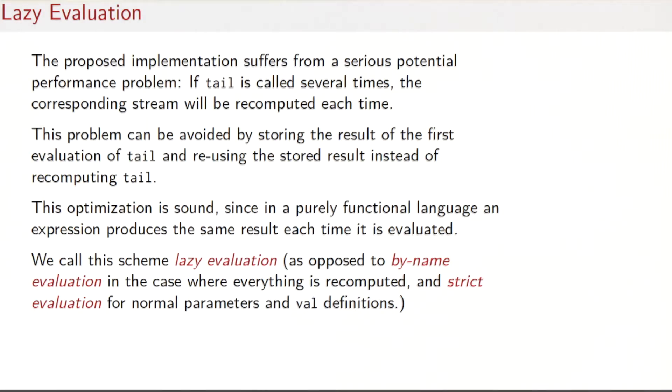The implementation of streams that you've seen in the last session solves the problem of avoiding unnecessary computations when the tail value of a stream is not needed. But it suffers from another very serious potential performance problem: if tail is called several times, the corresponding stream will be recomputed each time, which could by itself cause an exponential blow up in program complexity.